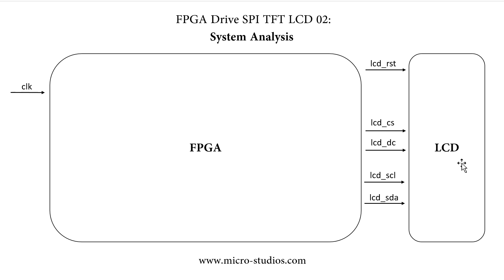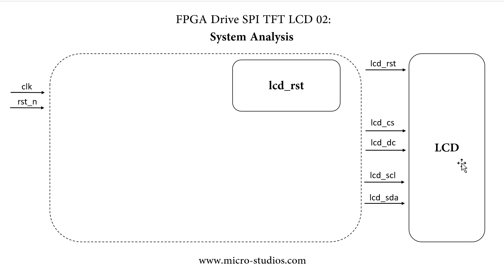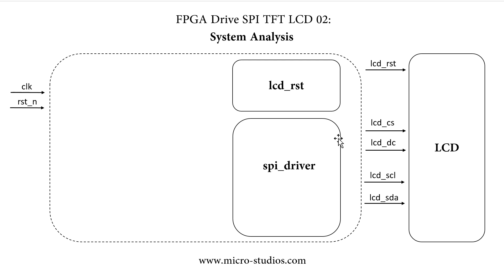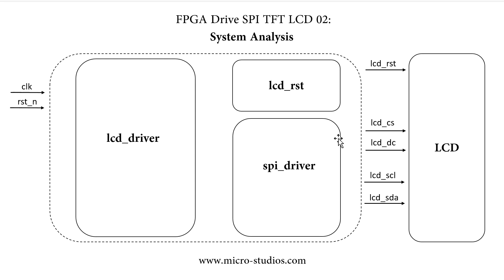We will have the clock signal from the crystal on the board, and we will also have the system reset signal. Now let's take a look at the inside of the FPGA. The first module is the LCD reset module. The next module is the SPI driver module. The last module is the LCD driver module, which controls both the LCD reset module and the SPI driver module.